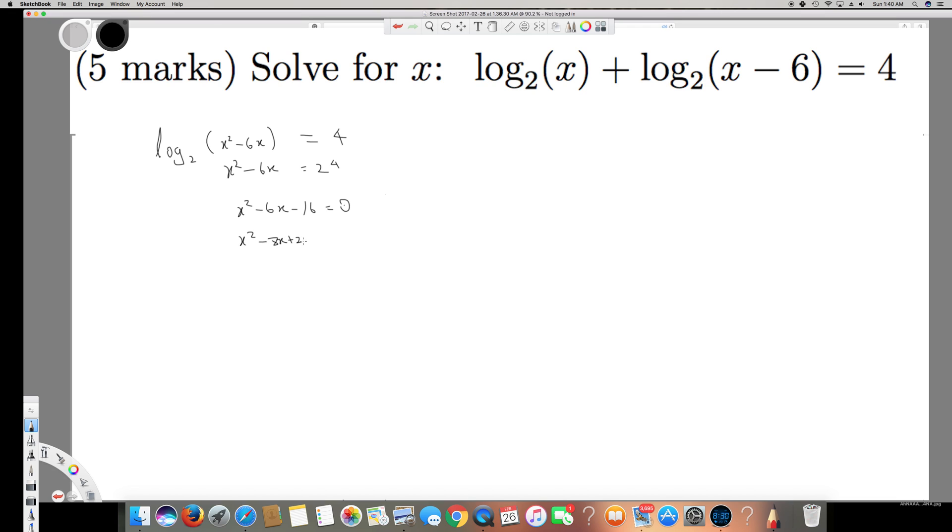Now I can factor this one. It's going to be (x - 8), and here I can take the 2 common. It's going to be (x - 8) equal to 0.